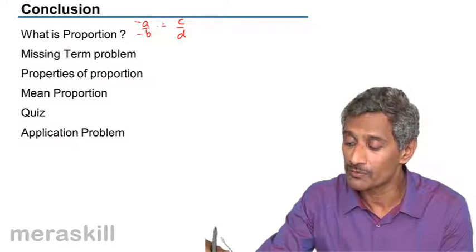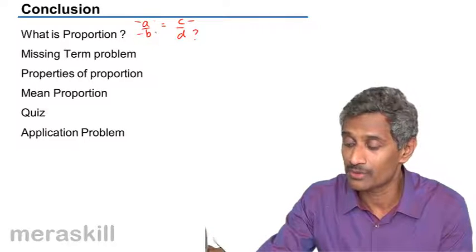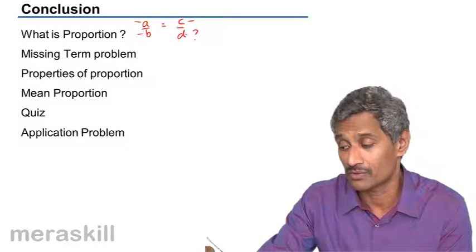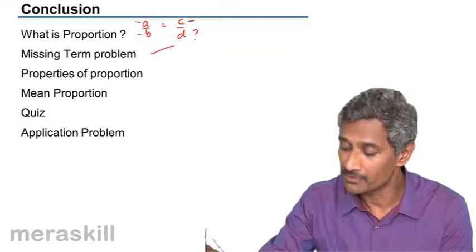Missing term problem. If you knew this, how do you find this we have done? For example, 2 by 3 we have and you have 7. So, this is going to be 7 into 3 upon 2. Those kind of problems.